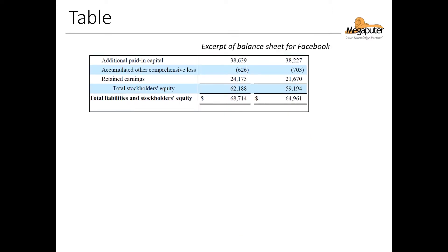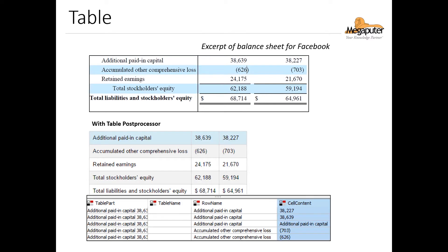What we can do is use the table post processor to tell the system that this is a table and that it should be extracted in a structured form. When we apply this post processor, it structures the output in a way that makes more sense and is more useful. As you can see at the bottom, each cell is now its own row in the output.